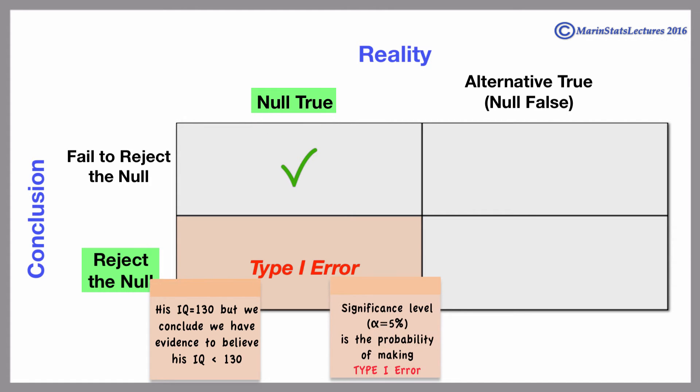The significance level, typically 5%, is the probability of making a type 1 error. Now, let's consider the case when in reality the alternative is true.